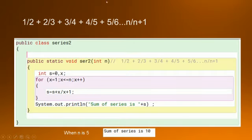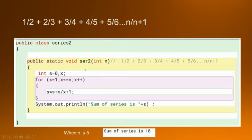Now over here in this series I have 1 divided by 2 plus 2 divided by 3 plus 3 divided by 4 and so on. Since I have taken this as int it will not show decimal numbers. If I wanted the sum to be in decimal numbers I could have taken it as a float or a double, but for the time being I just need to program it so you understand the concept. For the actual value you can take it as float also.